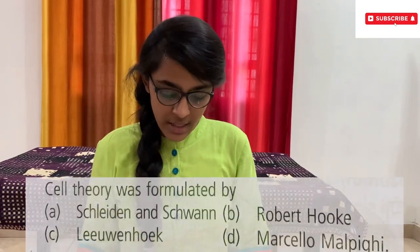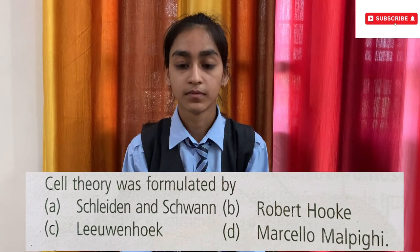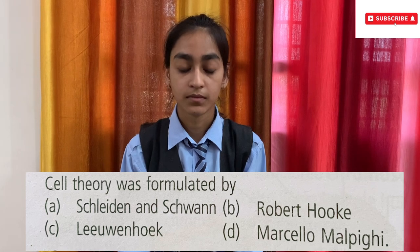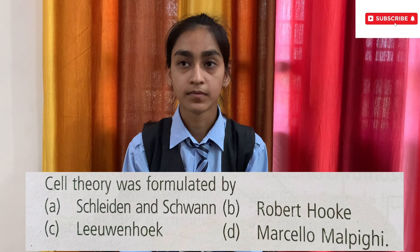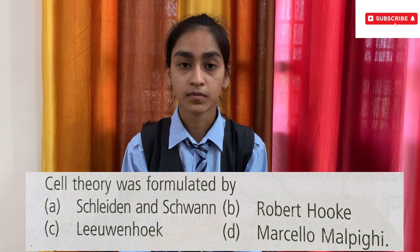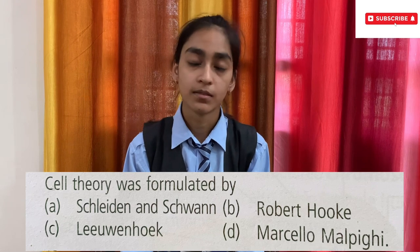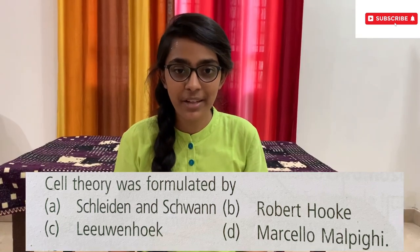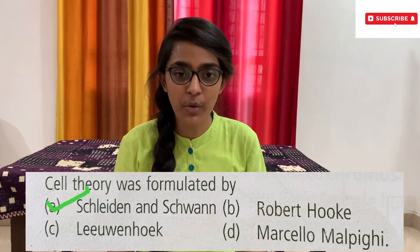Next question goes to Sejal. Cell theory was formulated by — options: A) Schleiden and Schwann, B) Robert Hooke, C) Leeuwenhoek, D) Marcello Malpighi. Option A, Schleiden and Schwann. Are you sure? Yes. Option A, Schleiden and Schwann, is the correct answer. Give her a huge round of applause!